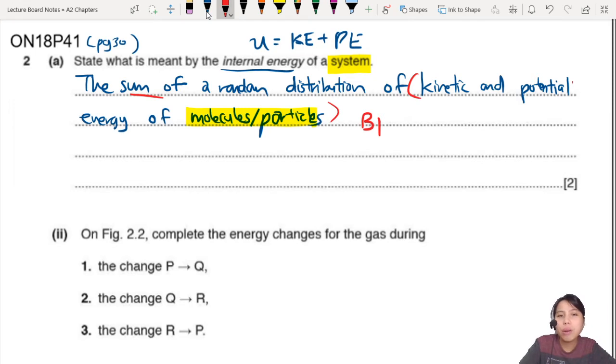Although here it says of system, you need to say molecules and particles inside the system. So two marks, one comes from you talking about sum of kinetic and potential energy. The other one mark here is talking about random distribution or random motion. So that is the other mark. The randomness of all these particles that contribute to the internal energy.